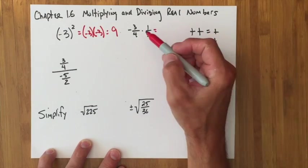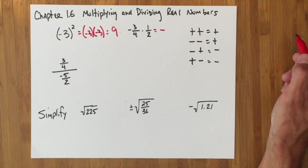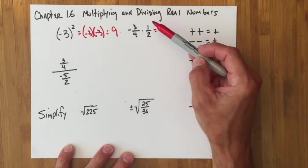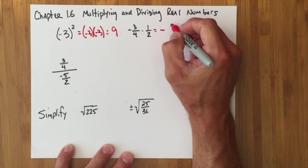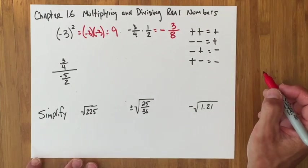With fractions, I see a negative times a positive, so I know my answer is going to be negative. Beyond that, I just multiply fractions like I normally do, top times top, bottom times bottom, so 3 times 1, 4 times 2, and I get negative 3 eighths.